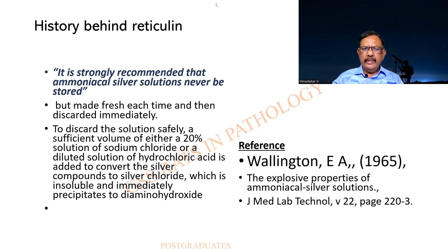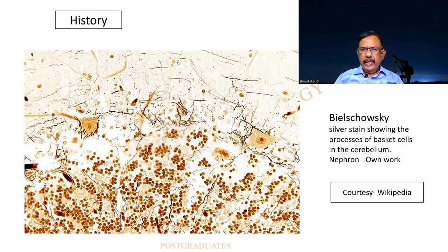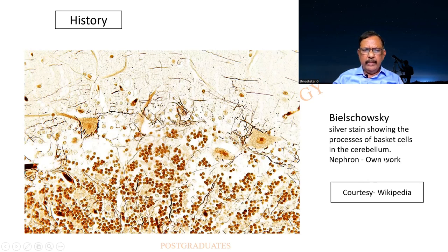This is the history behind the reticulin. Way back in 1965, this person narrated the explosive nature of the ammoniacal silver solution and the way to combat it: not to prepare it in large quantities and store it. And this is Belchowski, who did the staining. Look at the very fine reticular fibers in the neural tissue. If you take anatomy slides rather than pathology slides, you will find this gold chloride adorning them. This incidentally shows the basket cells found in the cerebellum.